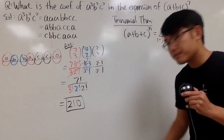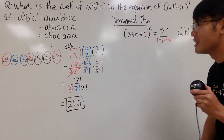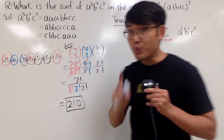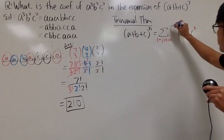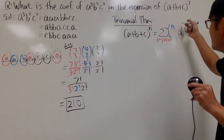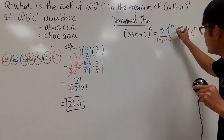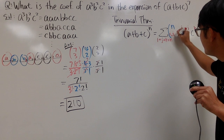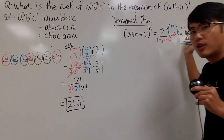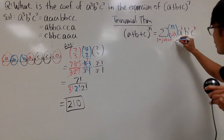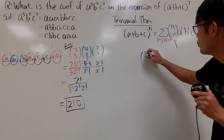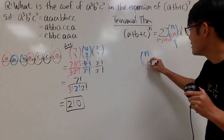We still have to have the coefficient. If you want the coefficient of A to the third, B to the second, C to the second, you write this as the trinomial coefficient — n choose i, j, k. The way to work that out is n factorial divided by i factorial times j factorial times k factorial.